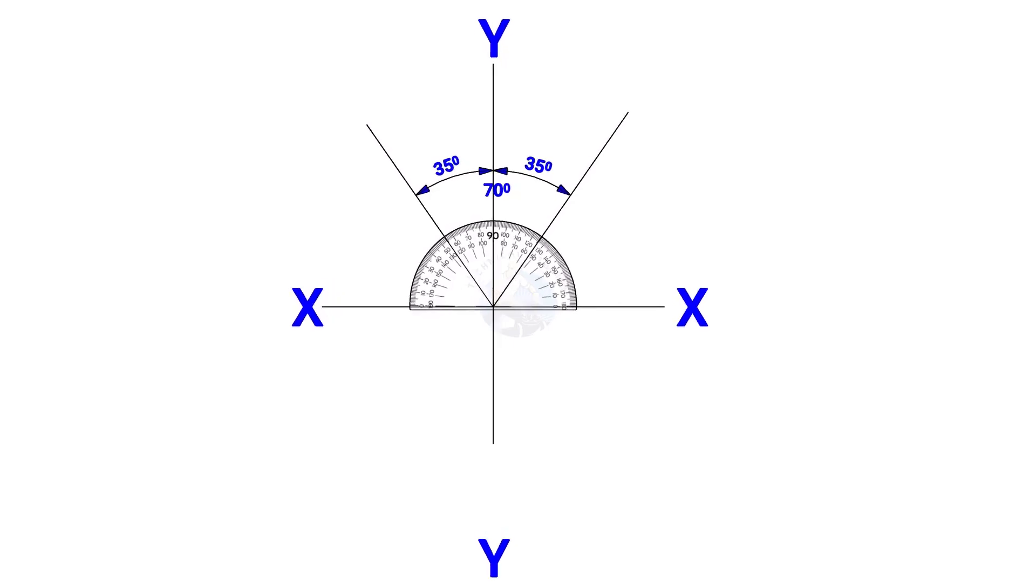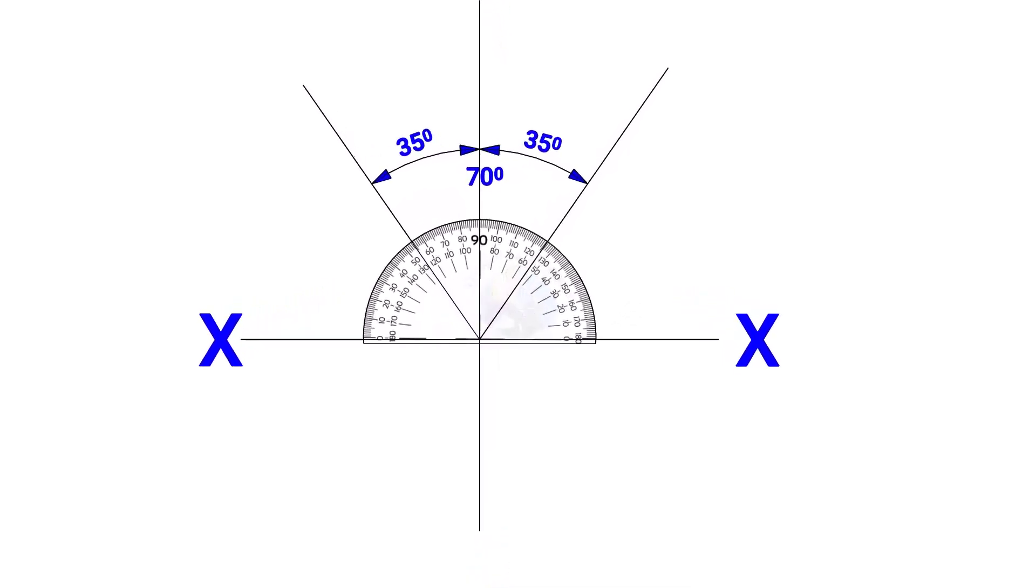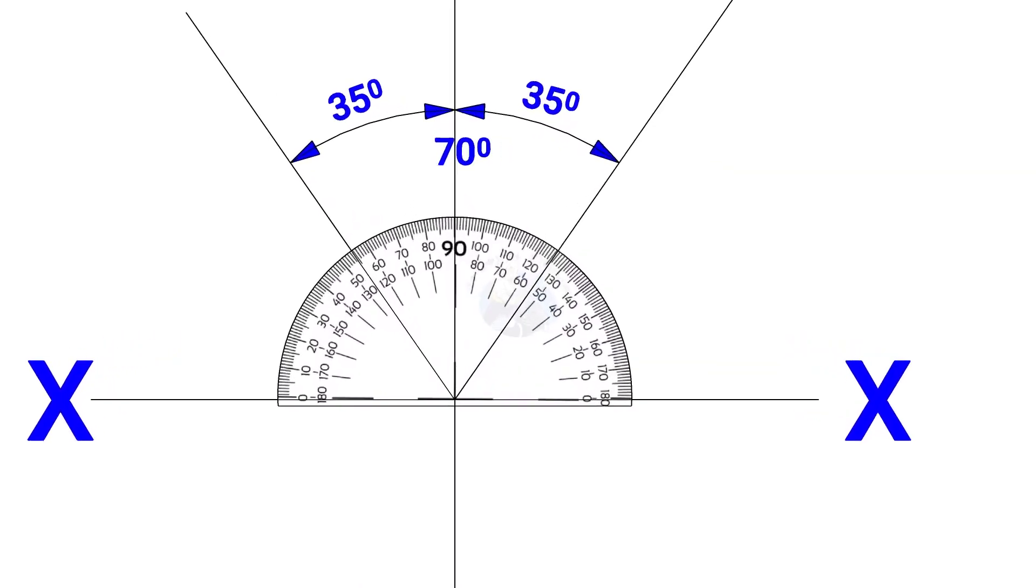Since the including angle of the Y branch is 70 degrees, mark 35 degrees on both sides of the axis YY.